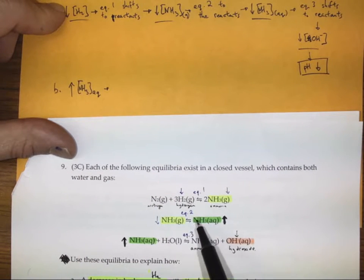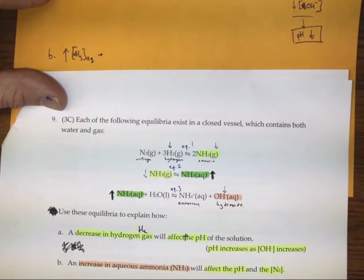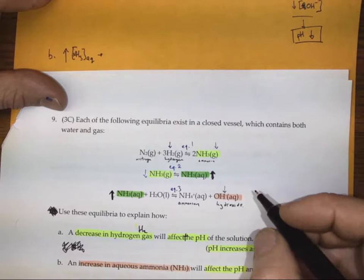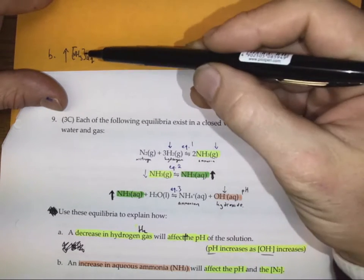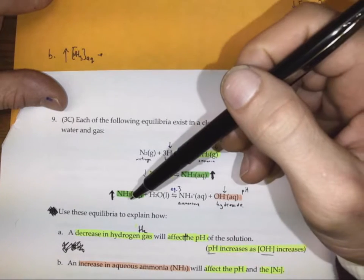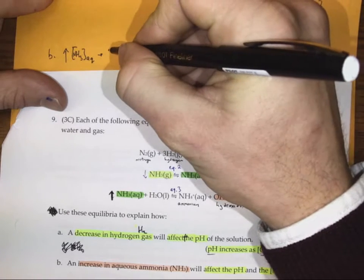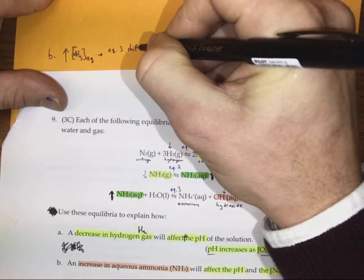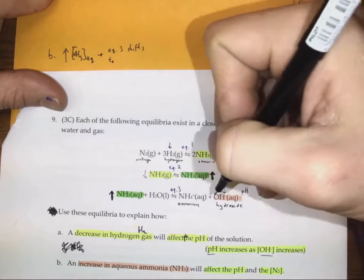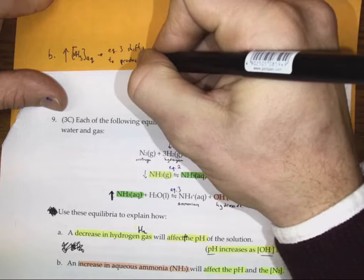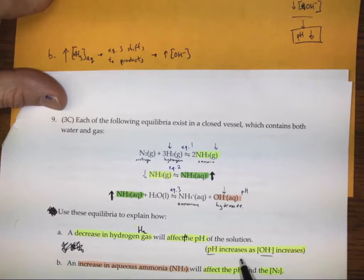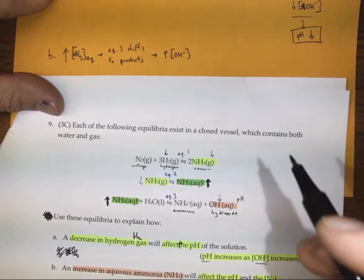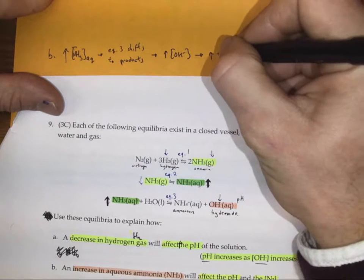Well, I'm concerned about pH in this question. pH is intricately linked to hydroxide concentration. So as my ammonia concentration increases in its aqueous form, it's going to shift equilibrium 3 to the products, in turn increasing the concentration of hydroxide. Then we can say pH increases as hydroxide increases, so that's going to lead to an increase in pH.